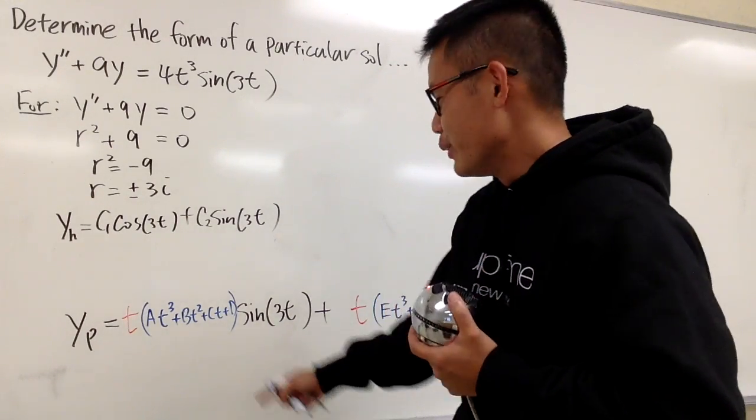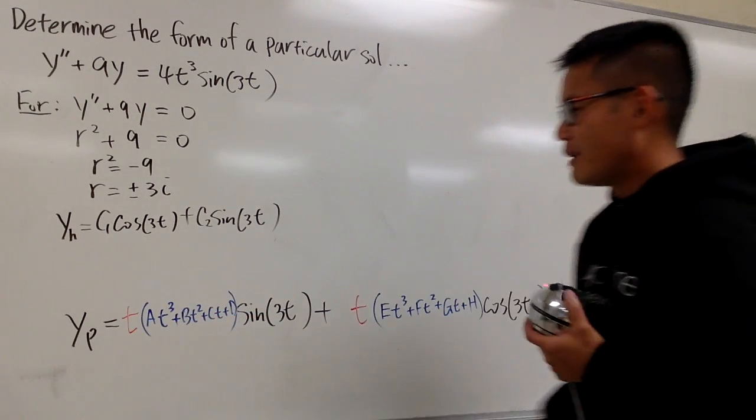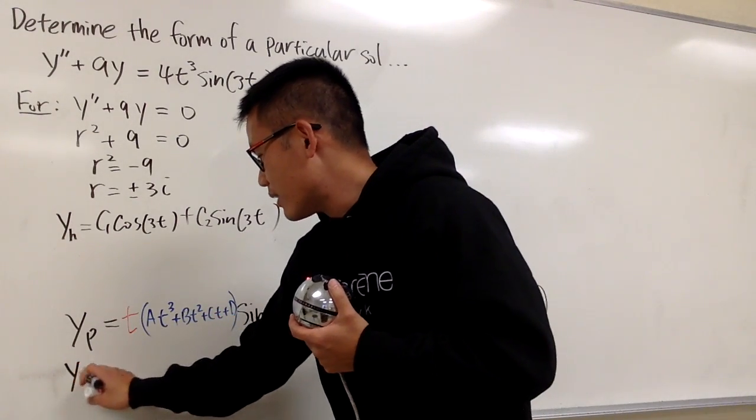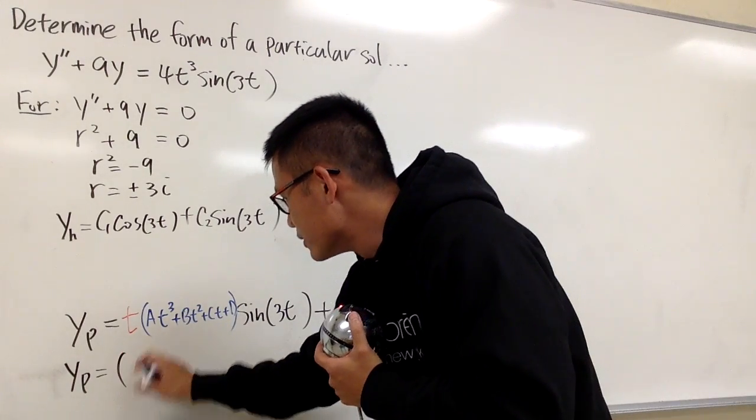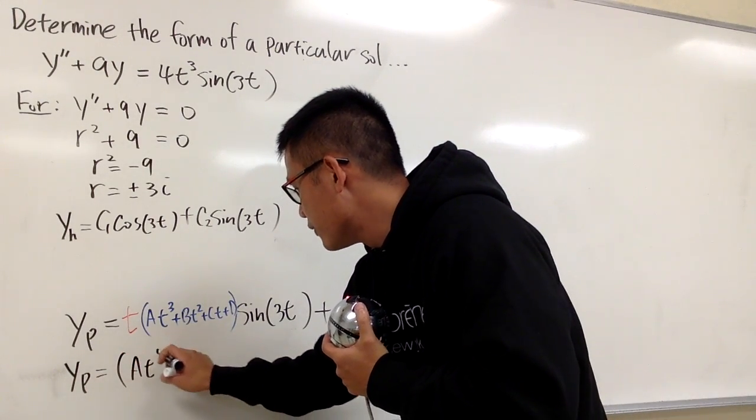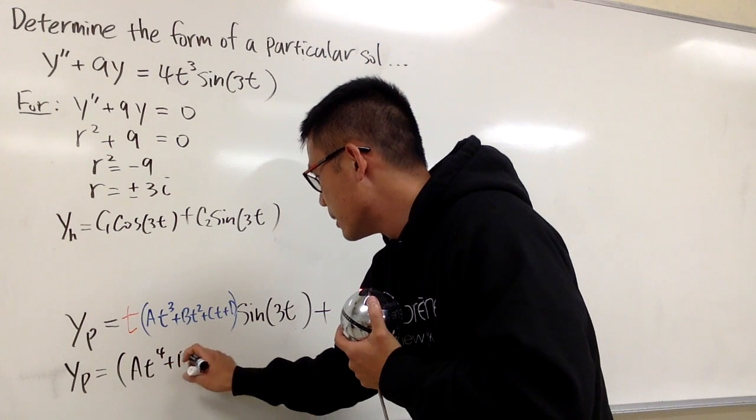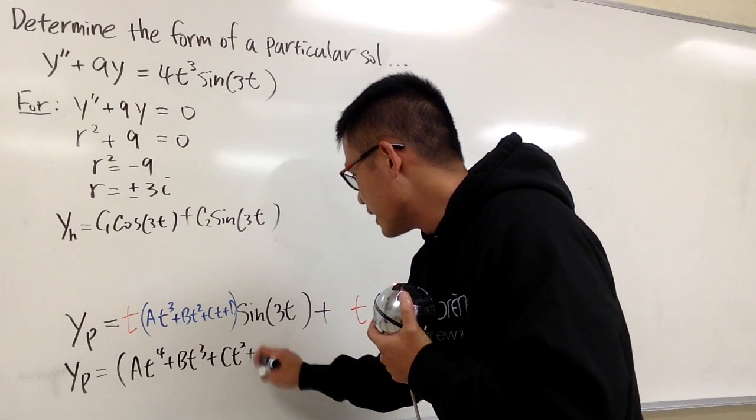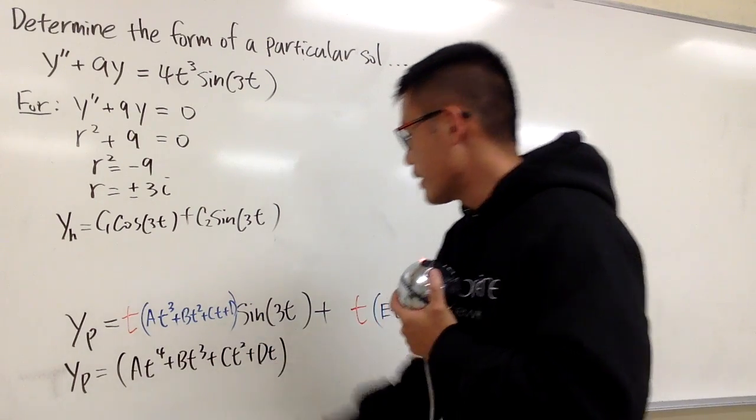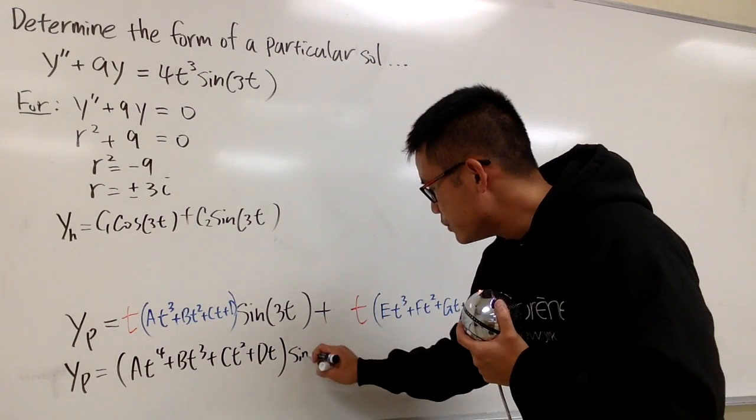And that's pretty much it. If you want to leave the answer like this, it's okay. But I think I will just write it down altogether by distributing the t into the parentheses. So anyways, you'll see this is a t to the 4th power and then plus b t to the 3rd power plus c t squared plus dt. And then you multiply by sine of 3t.